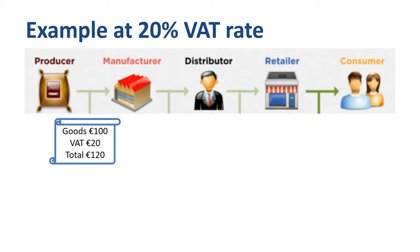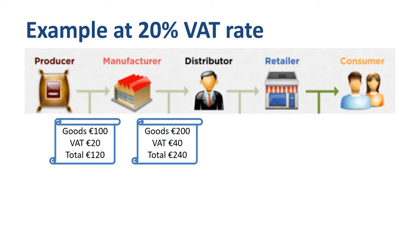The manufacturer of the jewelry converts the seashells to beautiful jewelry and sells them for 200 euro to a distributor. On top of the 200 euro for the goods, she charges 40 euro in VAT, and the invoice total is 240 euro.